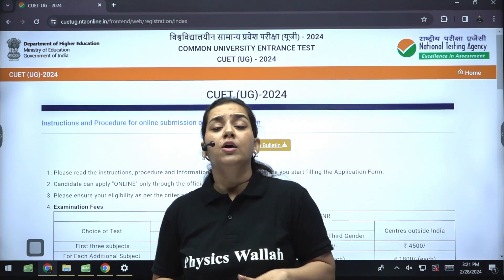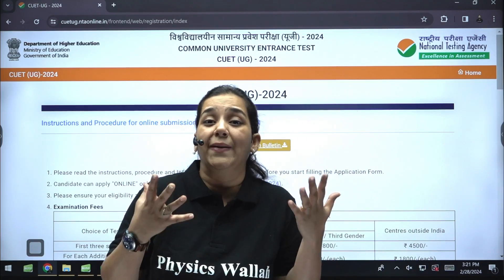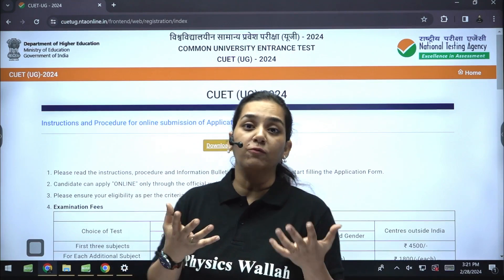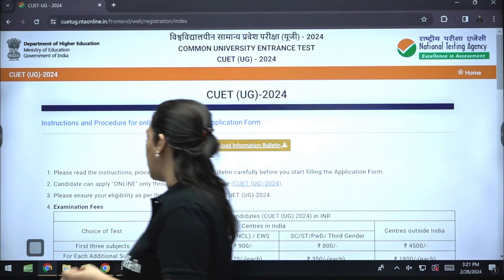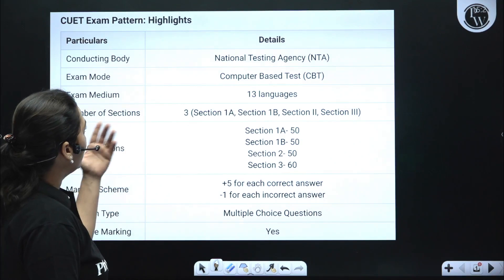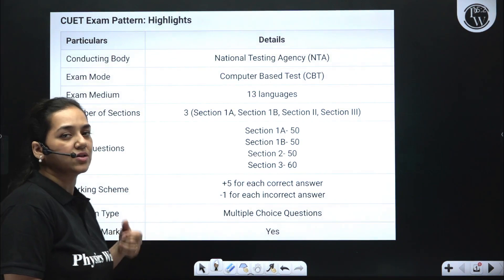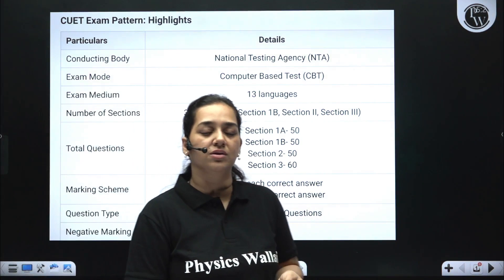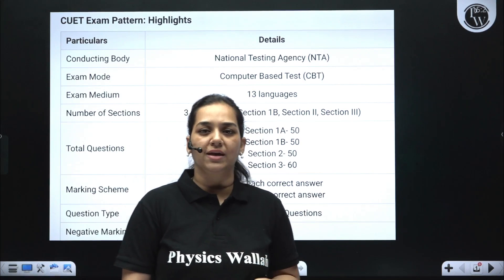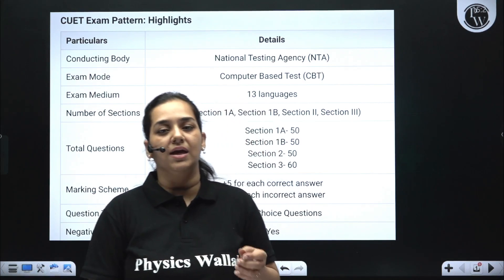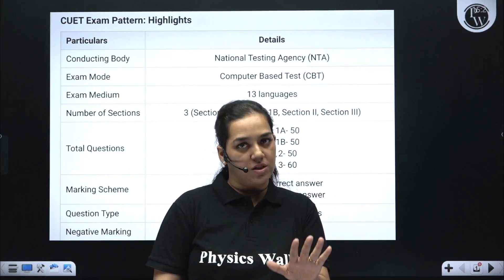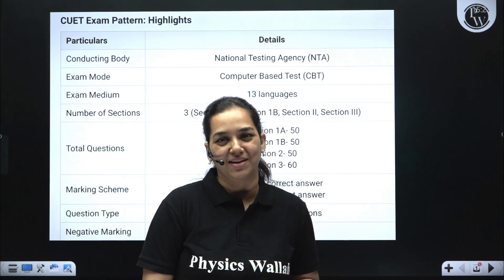Now you might want to know what the pattern is like — what the paper will look like. So here is a small overview. As I said, it is a multiple choice question examination and a computer based test. Every question carries 5 marks and a negative marking of minus 1 is also there in this examination.